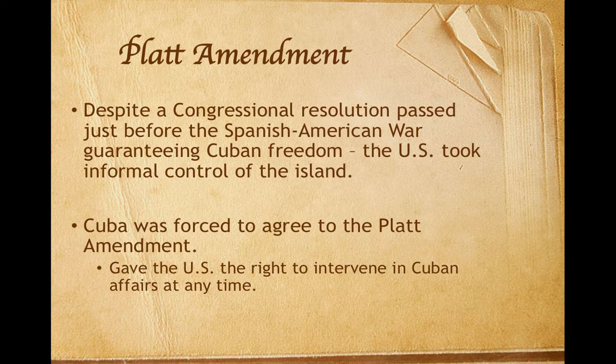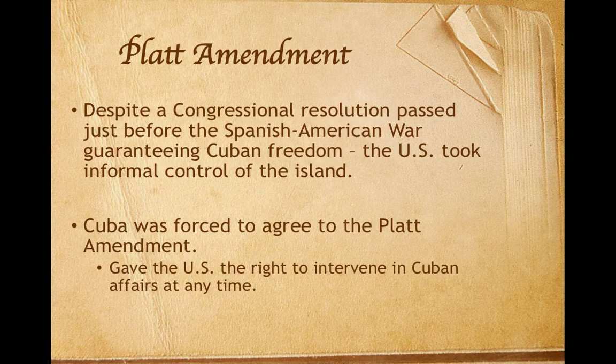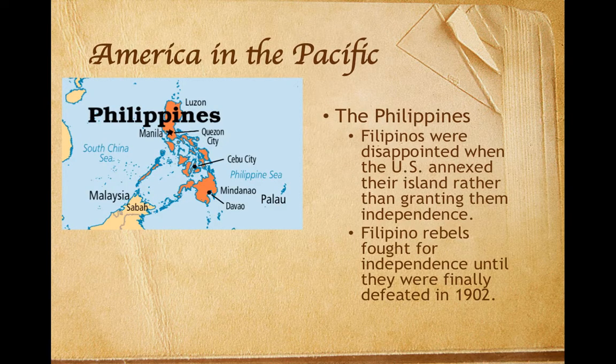A congressional resolution passed just before the Spanish-American War had guaranteed the independence of Cuba, but even this island came under informal control of the United States. Cubans were forced to agree to the Platt Amendment, which gave the United States the right to intervene in Cuban affairs at any time. Regarding America's presence in the Pacific — the Philippines first. Filipinos were greatly disappointed when Congress decided to annex the Philippines instead of granting them independence. In fact, Filipino rebels fought against this new American colonial rule until they were finally defeated in 1902.